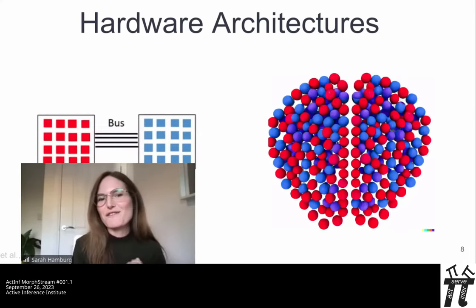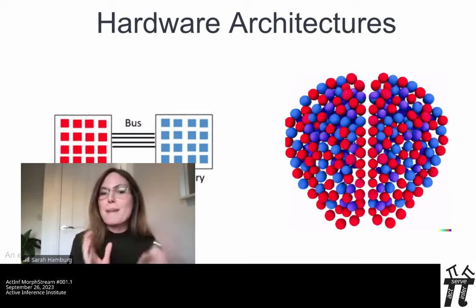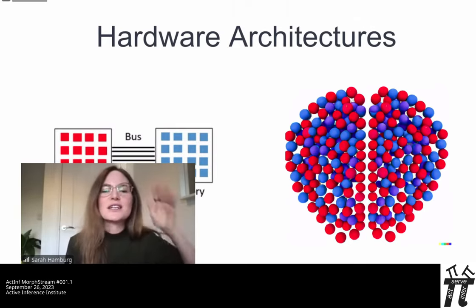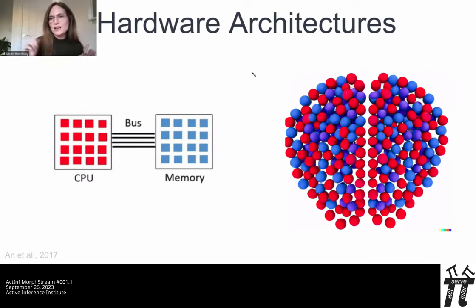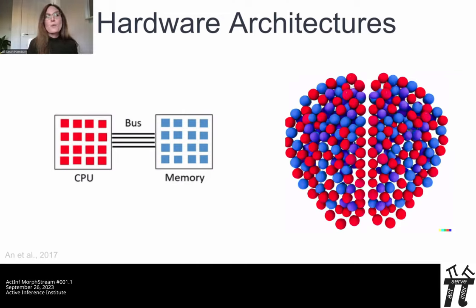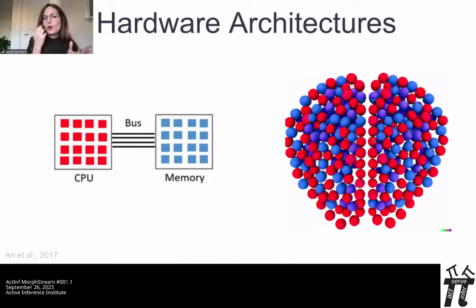Traditional Von Neumann computers have physically separate computing and memory units. During computation, data must transfer backwards and forwards very fast, creating a bottleneck for speed and energy. Whereas in neuromorphic architectures, computing and memory occur in the same place — they're said to be co-located. Individual neurons perform computation, while memory is represented by the strength of the connections — the weights between neurons, so the synapses.